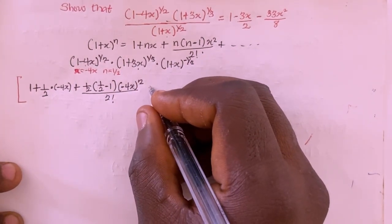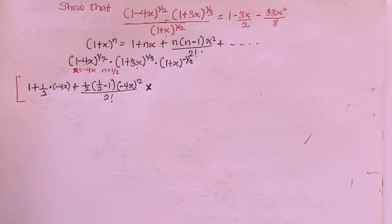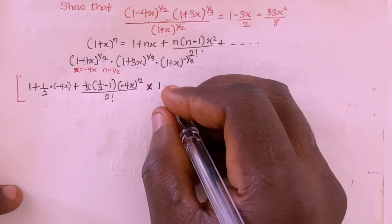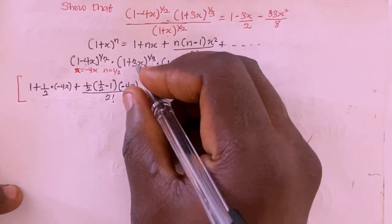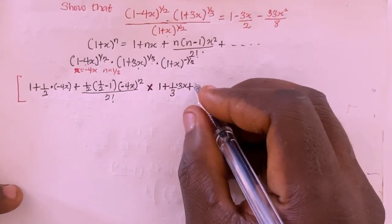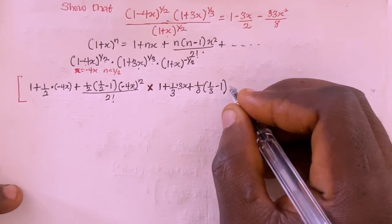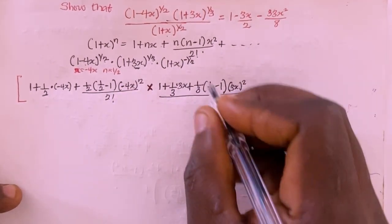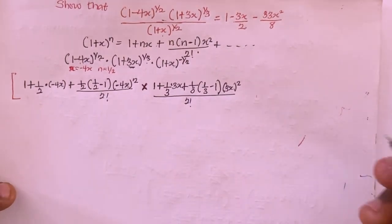For the second factor, that's multiplied by: 1 + (1/3)(3x) plus (1/3)(1/3 - 1)(3x)² divided by 2 factorial, plus other terms. Here n = 1/3 and x-term = 3x.